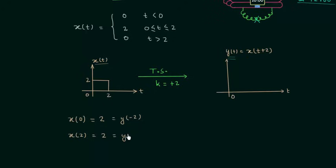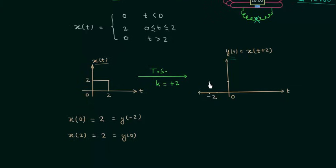So y(0) is equal to 2. Now we have the complete information to plot the waveform of the new signal. When time t is equal to minus 2, y(t) is equal to 2. When time t is equal to 0, y(t) is again equal to 2. Joining these points gives us the resultant waveform of the new signal.